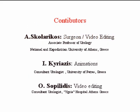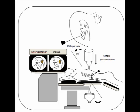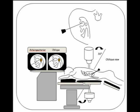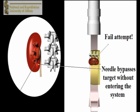With a biplannar fluoroscopic technique for access to a posterior calyx with cephalocaudal C-arm rotation, the image intensifier is set initially in the vertical position. This provides a perpendicular view of the needle.